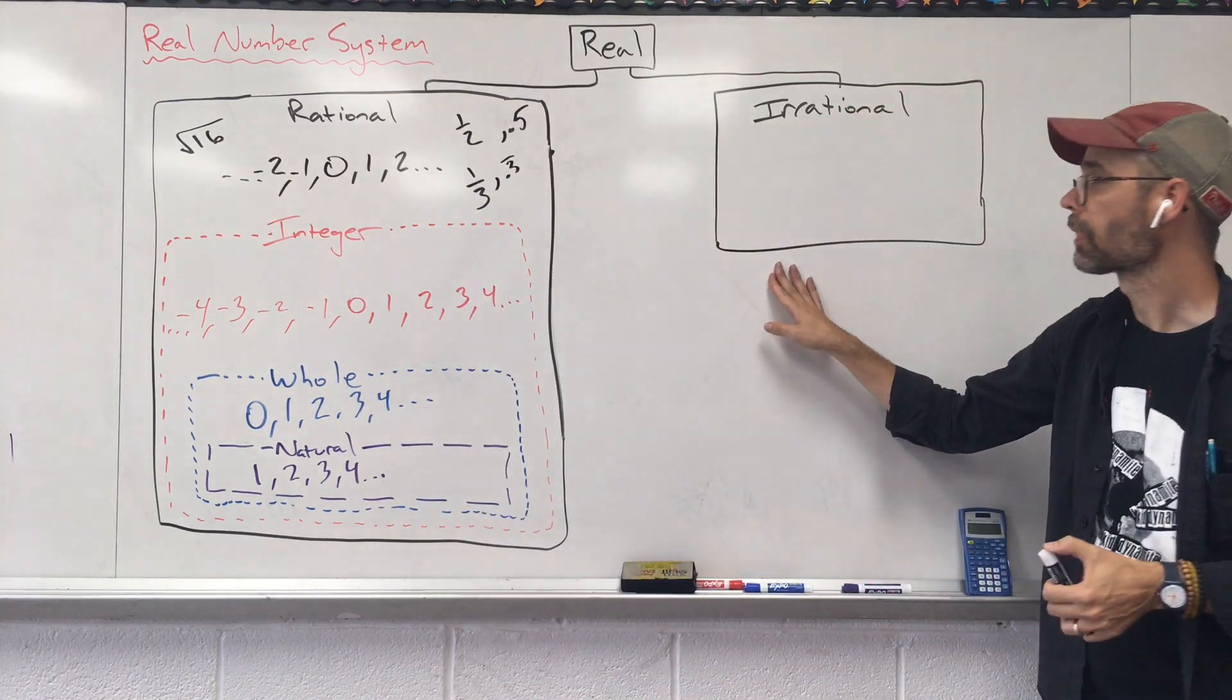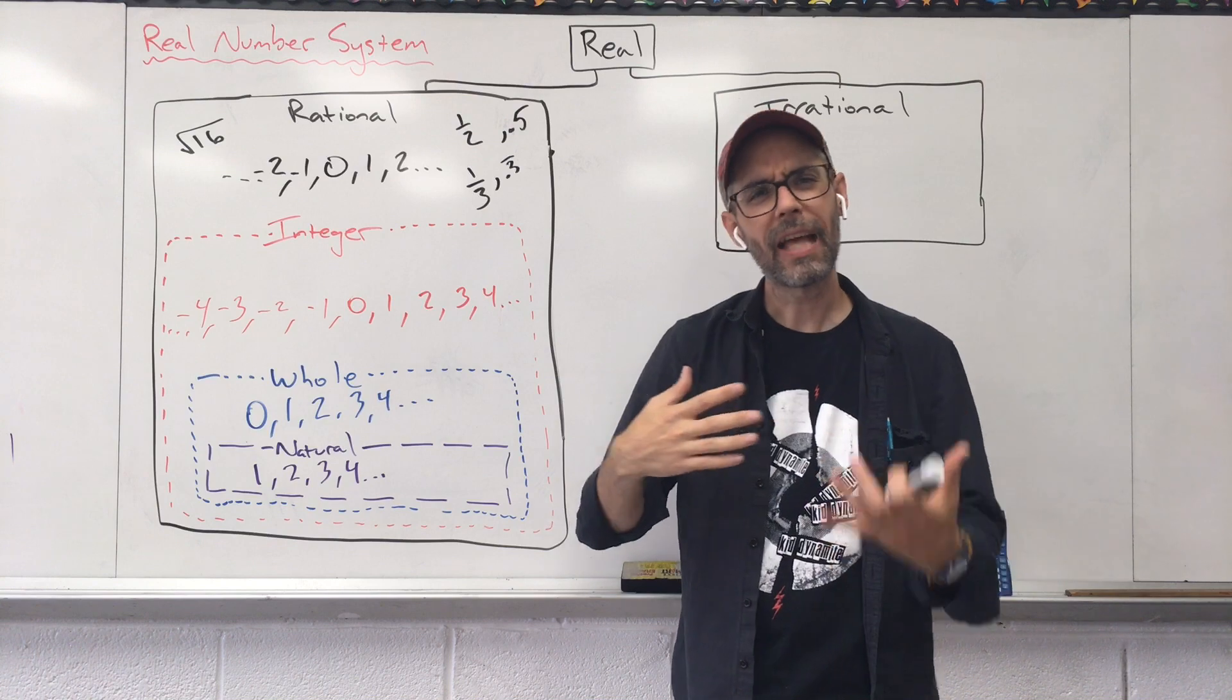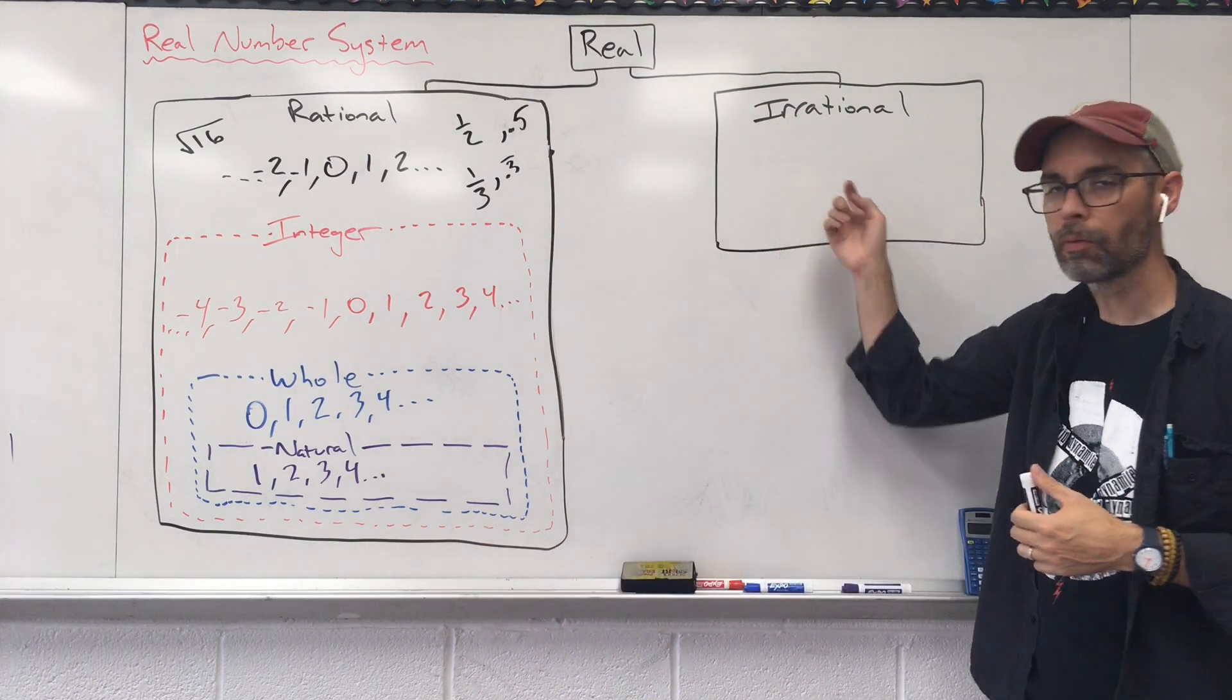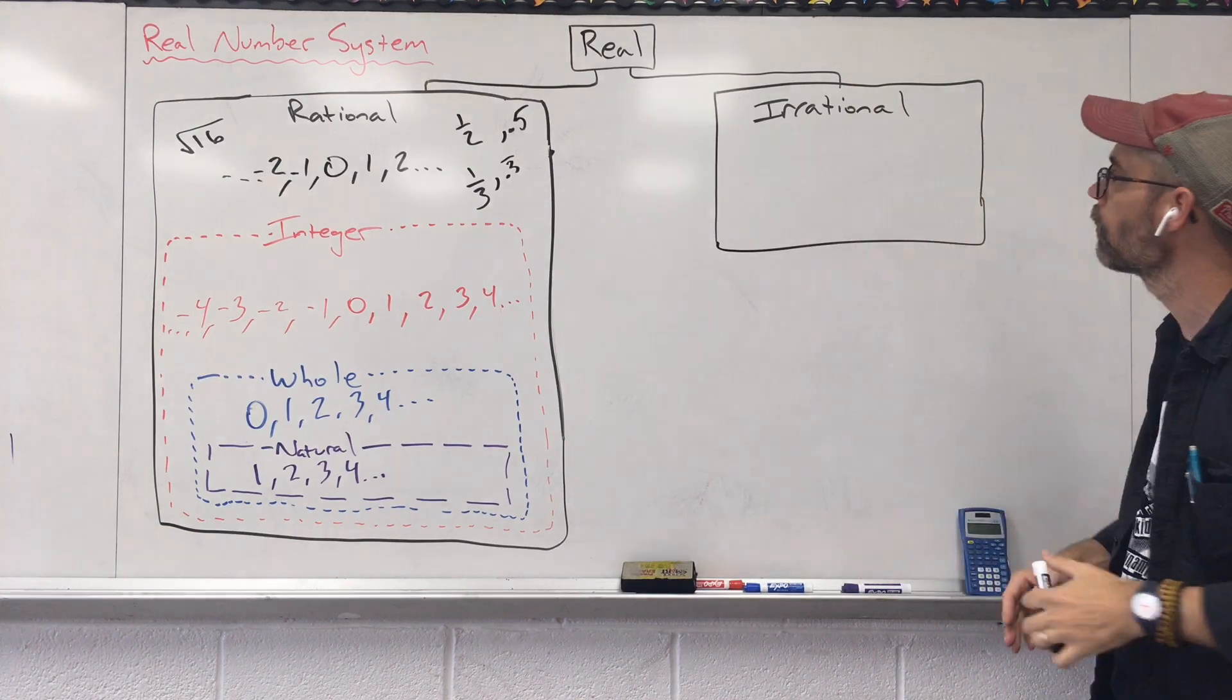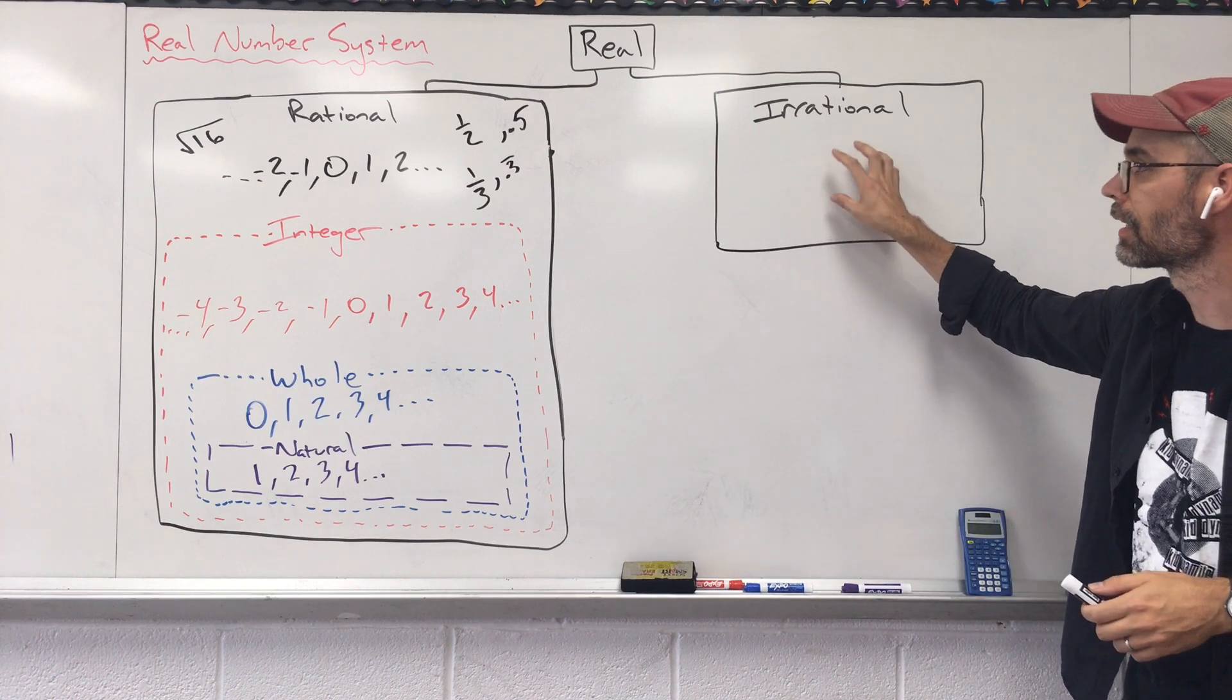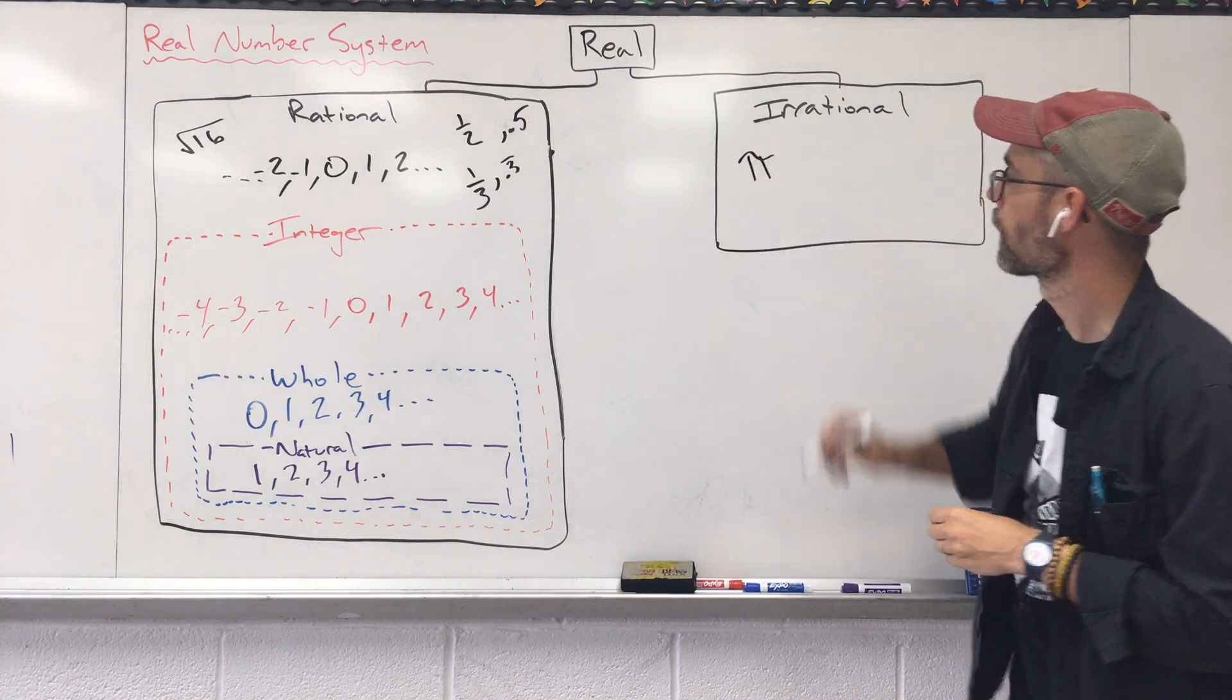Let's jump over to this other box. Irrational. Think of rational as someone that acts sane, someone that acts predictable. We know what's going to happen. We're in a safe, comfortable place. If someone's acting irrationally, they're going to be throwing their arms all over the place. You never know what you're going to get from one moment to the next. That's what happens with the numbers that fall into this category. One of the most famous numbers that you're going to find in that category? Pi.